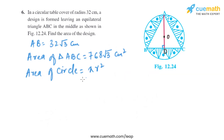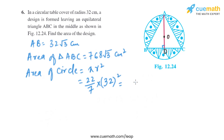Now let's find the area of the circle, which is πR². Using π = 22/7 and radius = 32, we get (22/7) × 32². Solving this, the area of the circle is 22528/7 square centimeters.